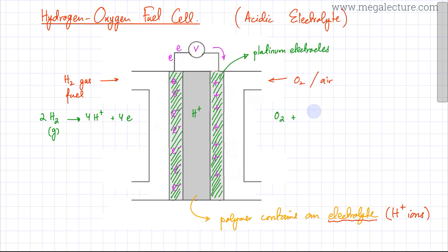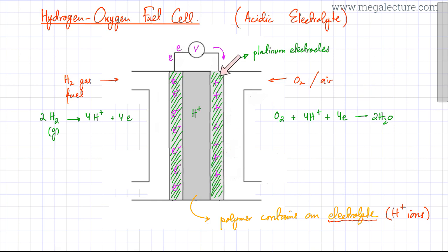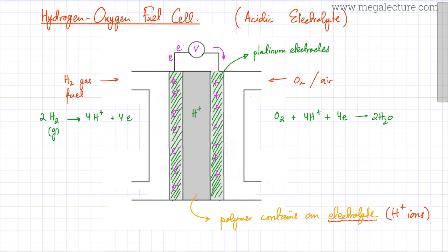Oxygen ends up reacting with the 4 H⁺ ions, gaining 4 electrons, and 2 water molecules are produced. Since oxygen is gaining electrons, the platinum electrode loses all its electrons to the oxygen and becomes positively charged. Water is a by-product that leaves this chamber, so water molecules come out from this side.